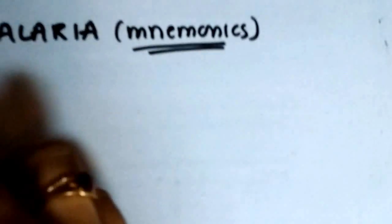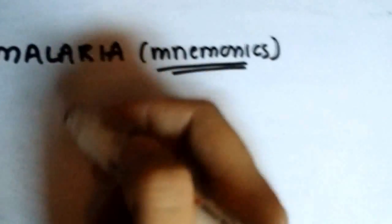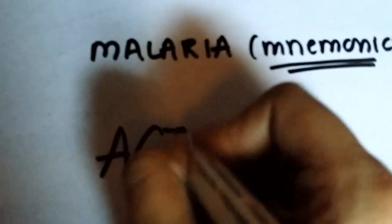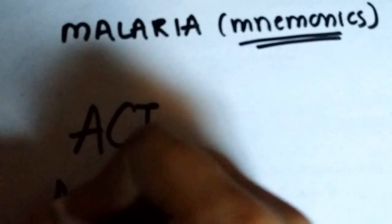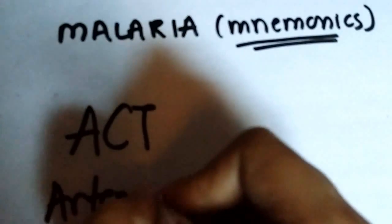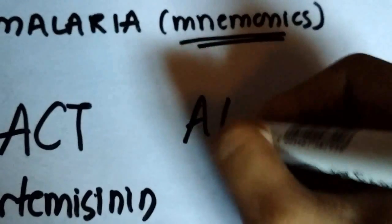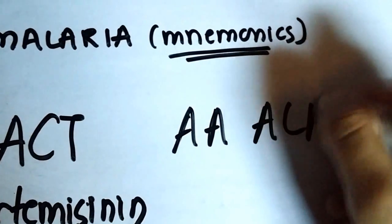Then you have the combination therapies. They are usually used in chloroquine resistant malarias. The most common combination therapy is the artemisinin combination therapies. I have a mnemonic for that: I'm going to think of ALS.